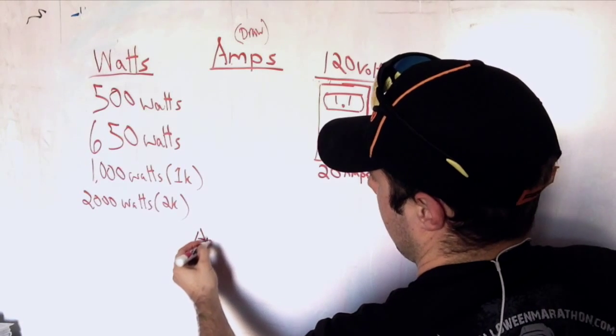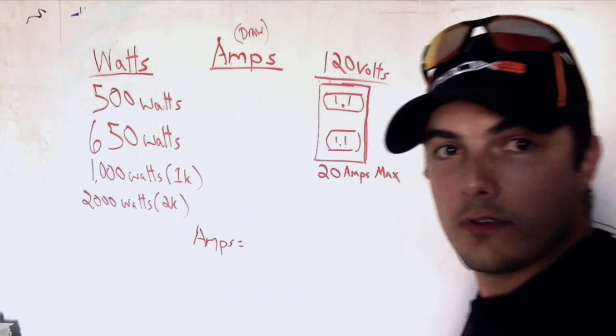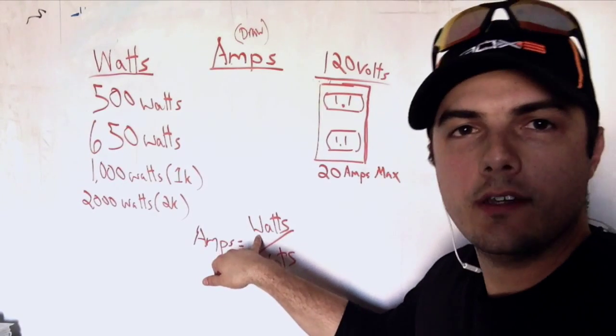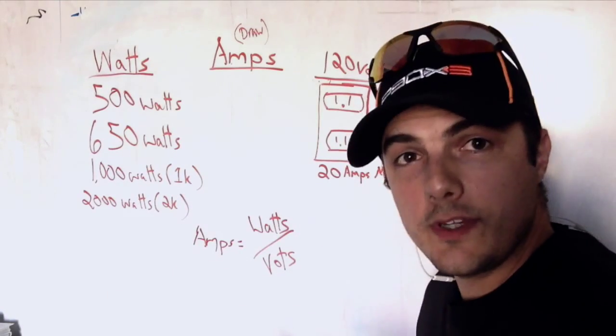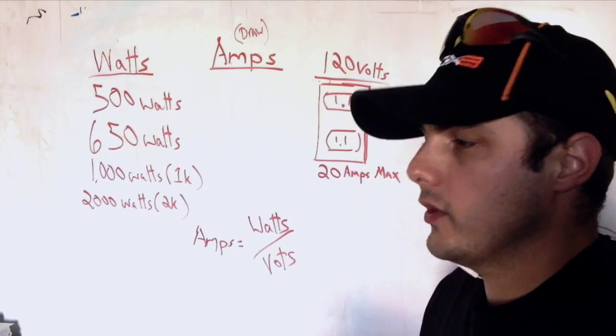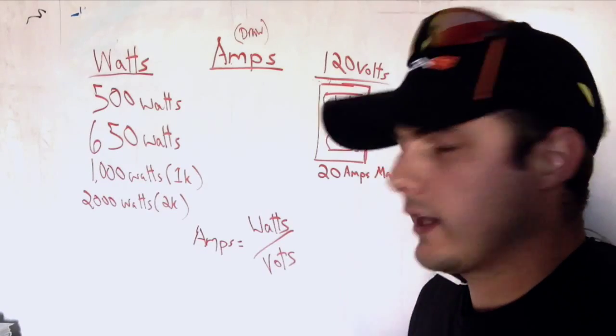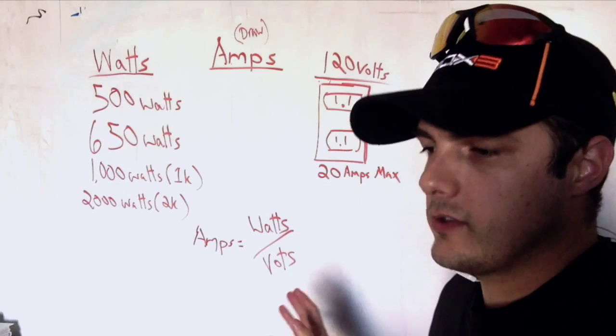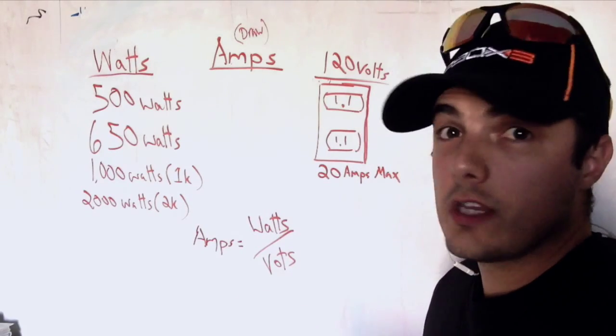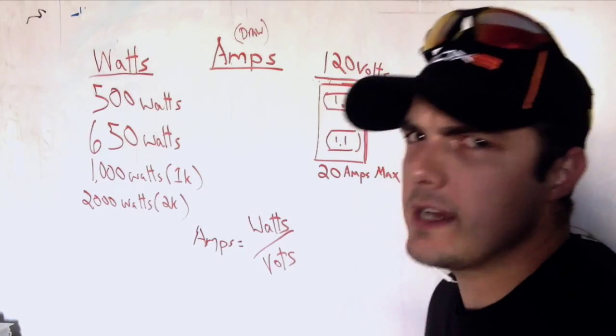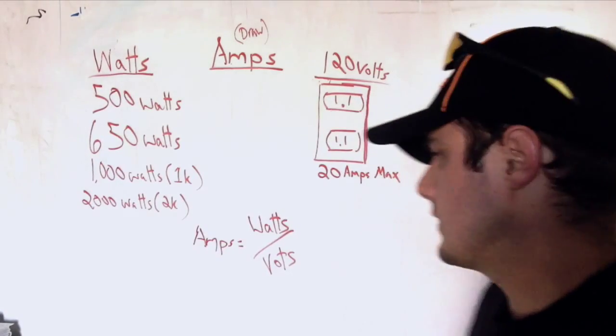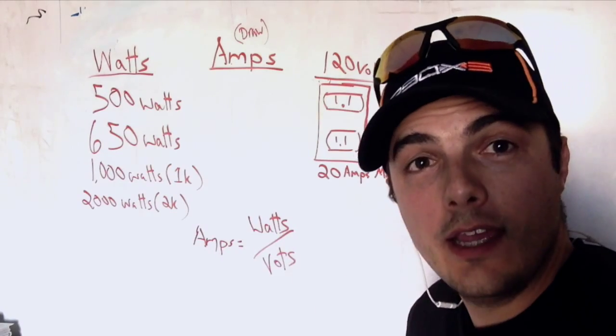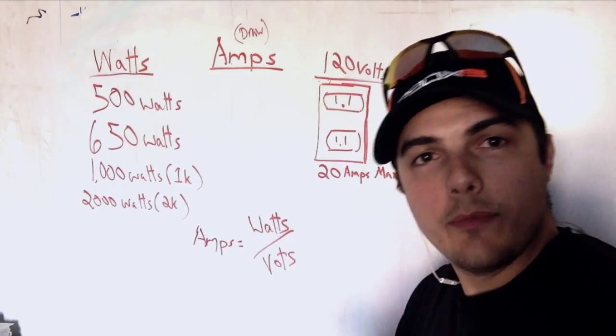You have your watts, and that's what the lights measured in. The draw that the light has on the circuit is measured in amps, and our circuit is supplying us volts. So all three of these things go together to figure out what our draw is. The equation for this is: amps is equal to your watts divided by your volts. Well the watts are easy, that's just whatever the lamp's rated at. The volts, that's also easy because we're working with 120 volts, because that's what all your regular American household AC electricity is coming in at.